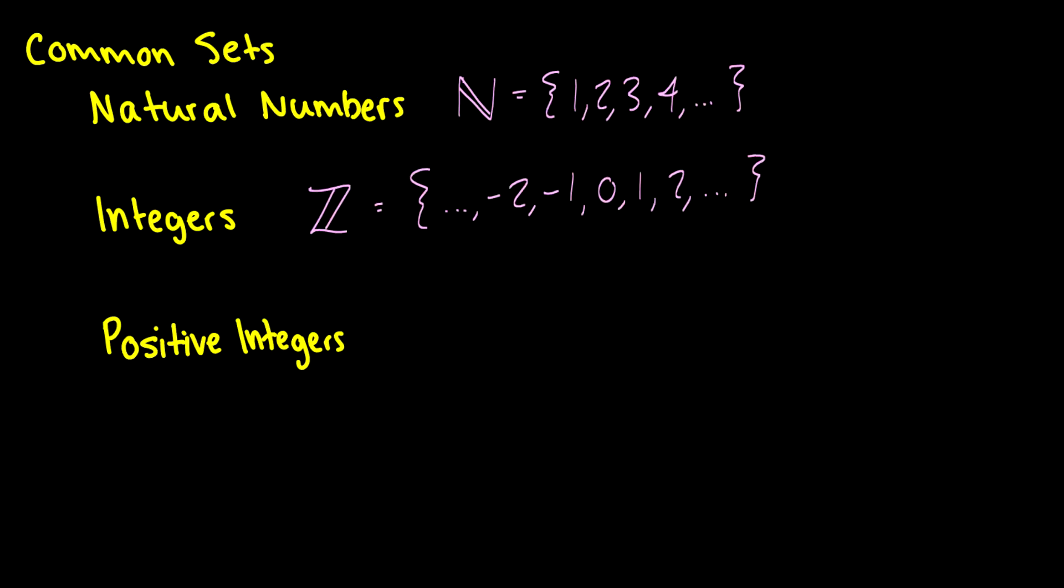Now when we do the positive integers, we do a Z with a little plus right here, and all we do is take the positive subset of integers. This sometimes includes 0, and it really should include 0.